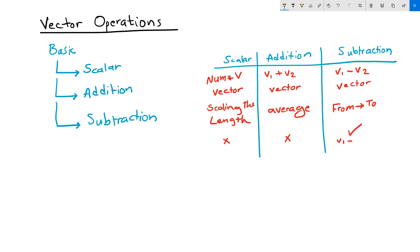v1 minus v2 creates a vector that goes from v2 to v1. And therefore, v2 minus v1 will create an opposite vector that goes from v1 to v2. And this is the relationship between the resulting vectors when you switch the input.